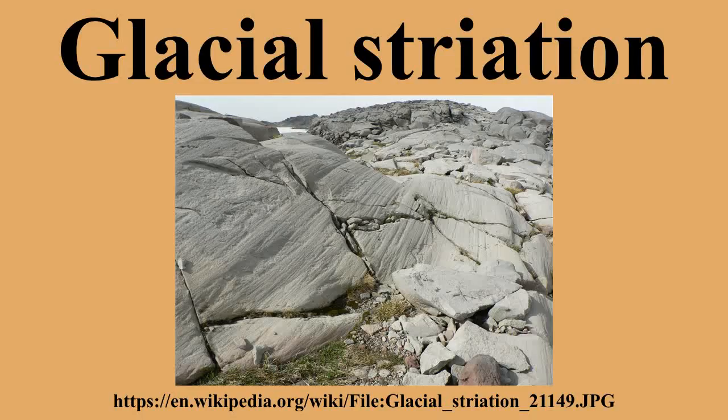Glacial striations are usually multiple, straight and parallel, representing the movement of the glacier using rock fragments and sand grains embedded in the base of the glacier as cutting tools. Large amounts of coarse gravel and boulders carried along underneath the glacier provide the abrasive power to cut trough-like glacial grooves. Finer sediments also in the base of the moving glacier further scour and polish the bedrock surface, forming a glacial pavement.